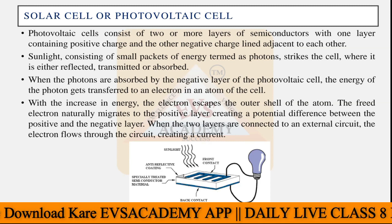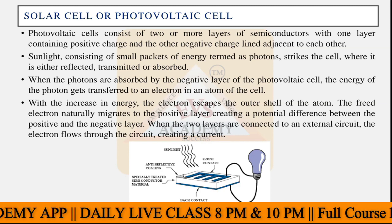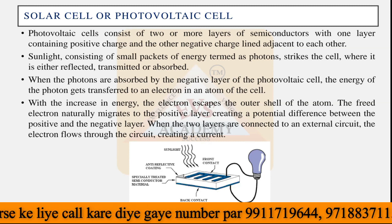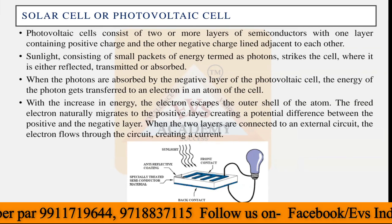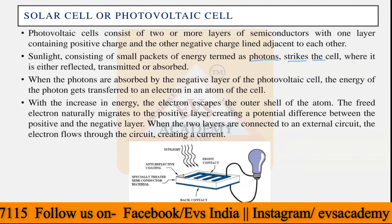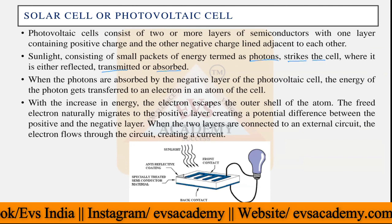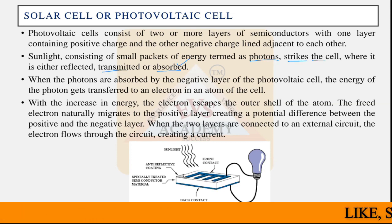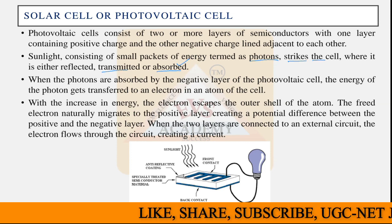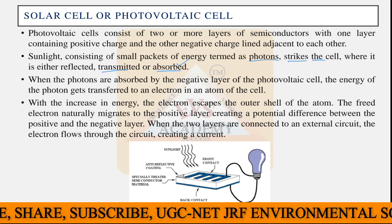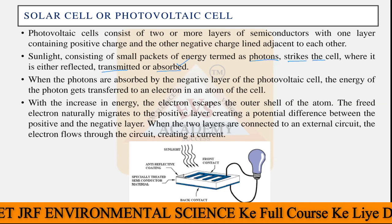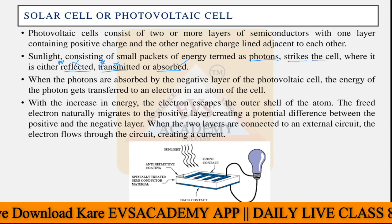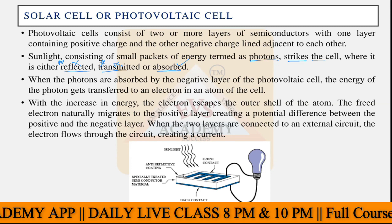The photovoltaic or solar cell is made up of two layers — one positive side and one negative side. Sunlight consists of small packets of energy called photons, as described in Planck's law. These photons strike the cell surface and are either reflected, transmitted, or absorbed. The absorbed solar energy is what we need. When absorbed, the electrons are energized and move from the positive side to the negative side to complete the circuit. Reflected and transmitted solar energy are not useful — only the absorbed energy is used for energizing the electrons.